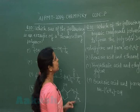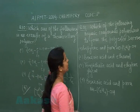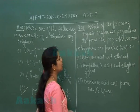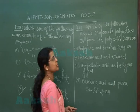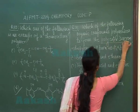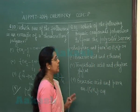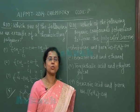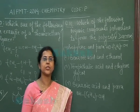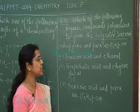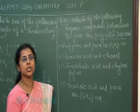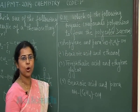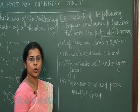The next question is question number 81. Which of the following organic compounds polymerizes to form polyester Dacron? Polyester means the polymer having many ester linkages, and ester linkage is produced by the reaction of carboxylic acid and alcohol.